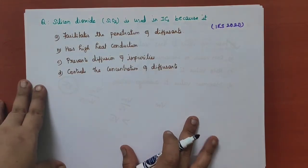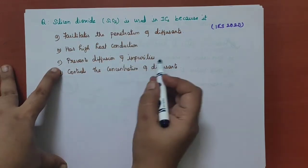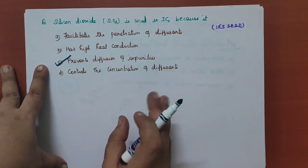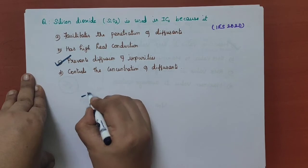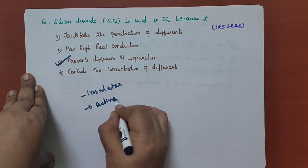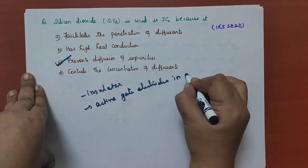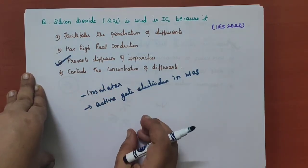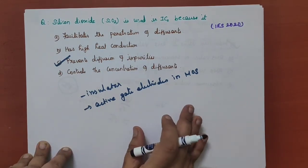The next question is: silicon dioxide is used in ICs because it prevents diffusion of impurities. It acts as a diffusion mask which permits selective diffusion into the silicon wafer. Apart from that, it serves as an insulator on the wafer surface. It acts as an active gate electrode in MOS device structures and is used to isolate one device from another. This silicon dioxide layer is formed on the surface of a silicon wafer by thermal oxidation at high temperature.